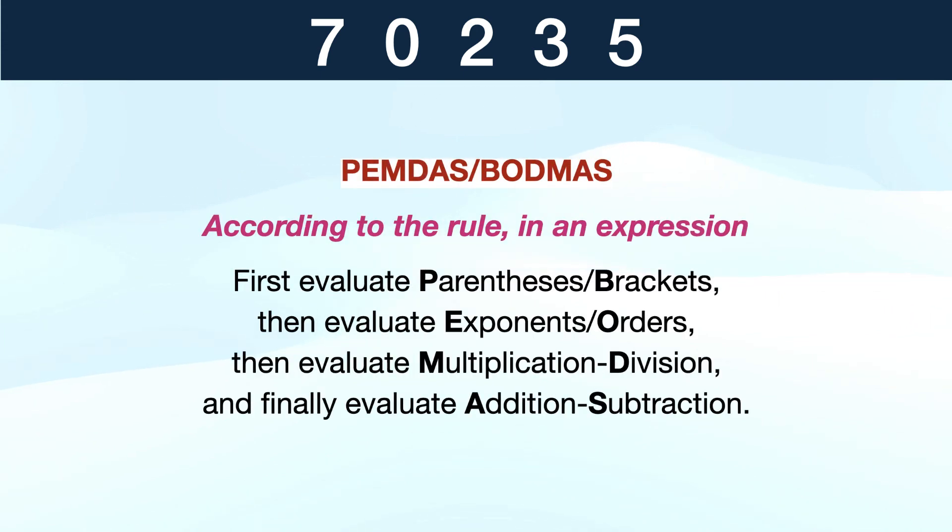We already know that we need to use only these 5 numbers which are 7, 0, 2, 3, and 5. First and foremost, there should not be any confusion in using the technique to solve this problem. This problem can be solved using the order of operations which is popularly called by the acronyms PEMDAS or BODMAS.